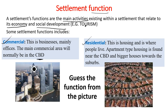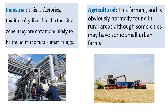Another function of settlement is the residential function — this is housing, where people live. We also have the industrial function, which has to do with factories. Traditionally it is found within the transition zones, but factories are now more likely to be found within the rural-urban fringe. We'll explain transition zones and rural-urban fringes during the course of this settlement series.